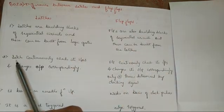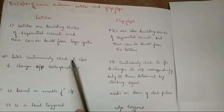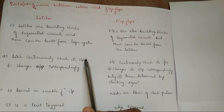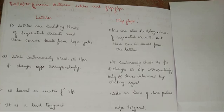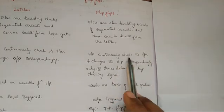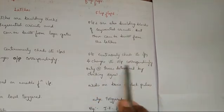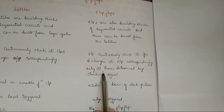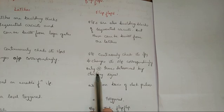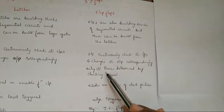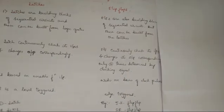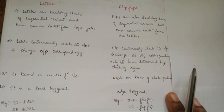Latches continuously check the inputs and change the output correspondingly — whenever there is a change in input, the output changes accordingly. But in a flip-flop, it checks its input and changes its output based only on the clocking signal — the output changes at times determined by the clocking signal.